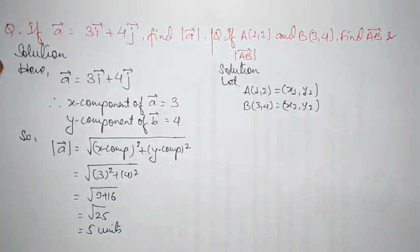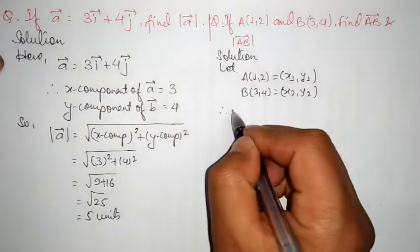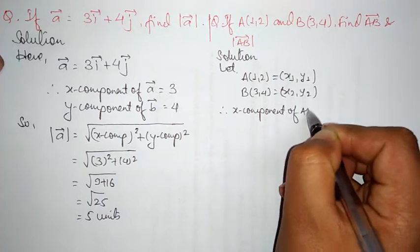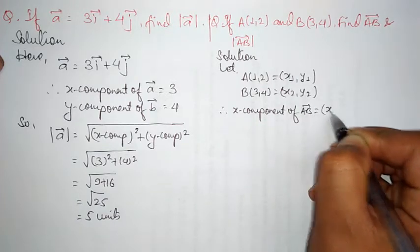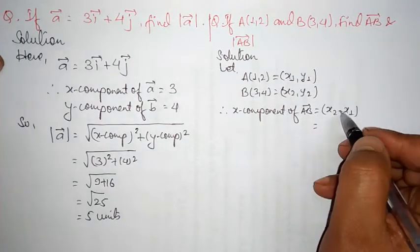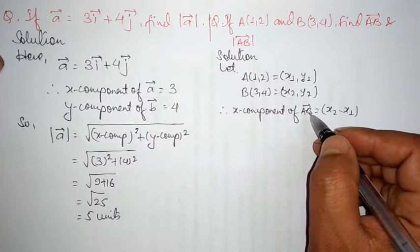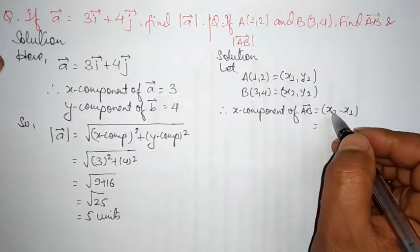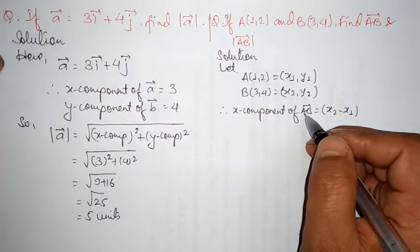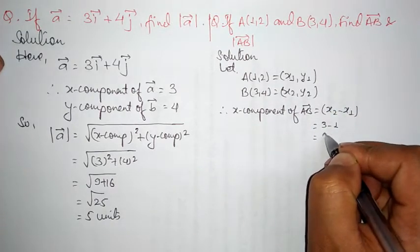We need to find the x component and y component of vector AB. Therefore, the x component of vector AB equals x2 minus x1 — that is, the x coordinate of the terminal point B, which is x2, minus the x coordinate of the initial point A, which is x1. That is 3 minus 1, which equals 2.